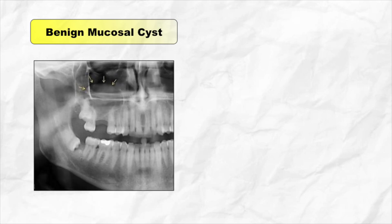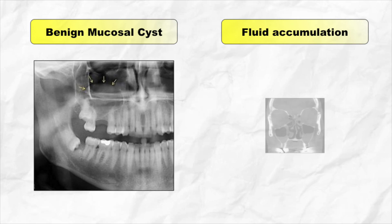Next point is how to differentiate a benign mucosal cyst of the maxillary sinus from fluid accumulation of the maxillary sinus. Look for the outer convexity of the lesion — in case of a benign mucosal cyst, the convexity will point upward. However, it is opposite or flat in case of maxillary sinus fluid accumulation, and this is due to gravitational force.